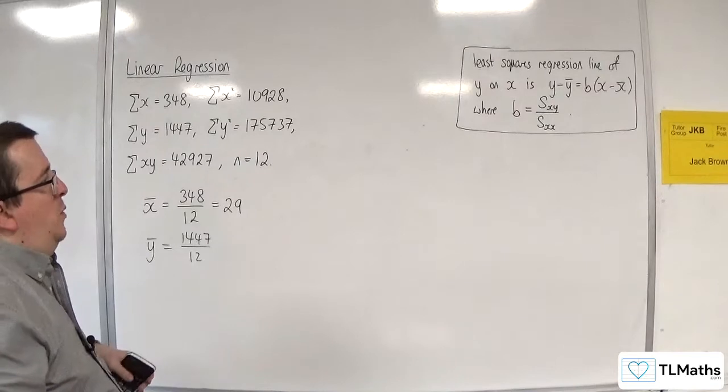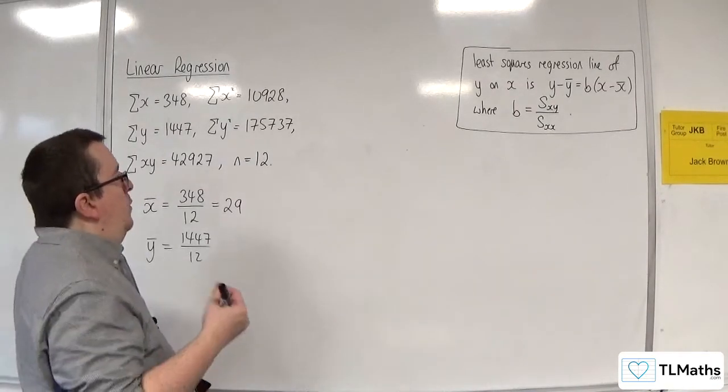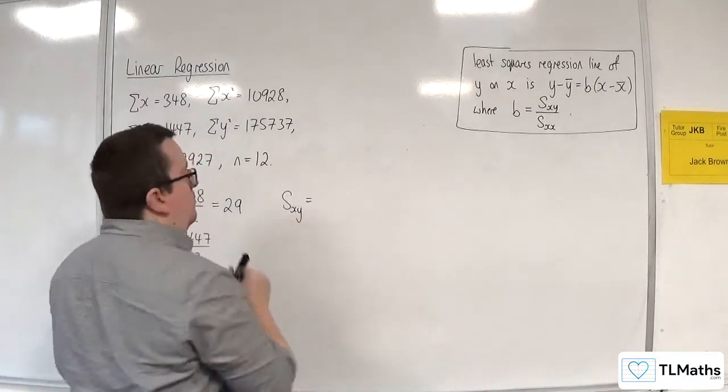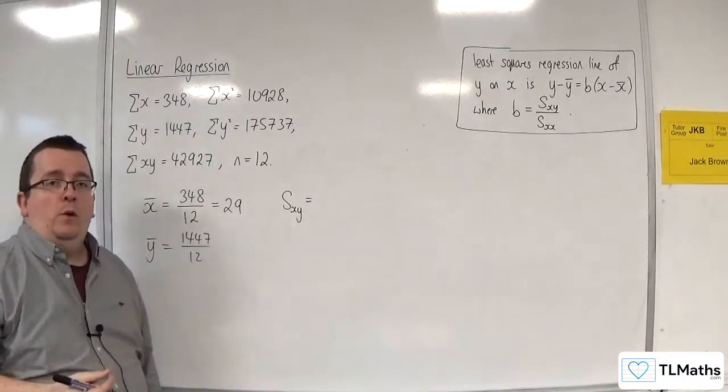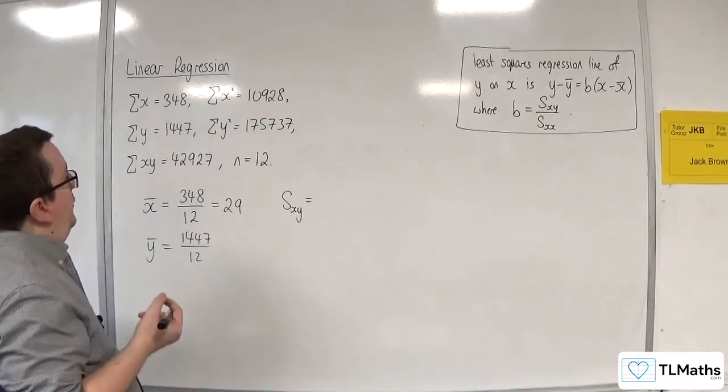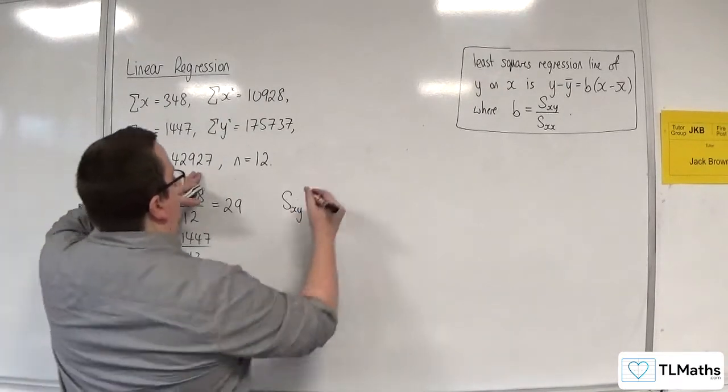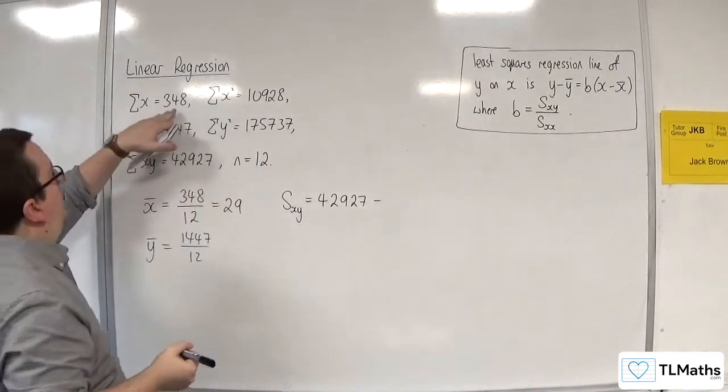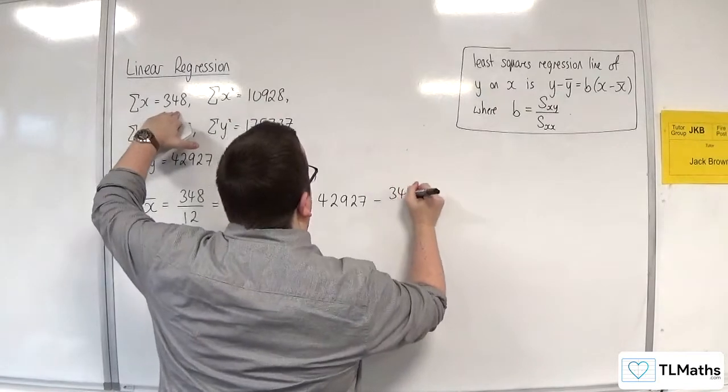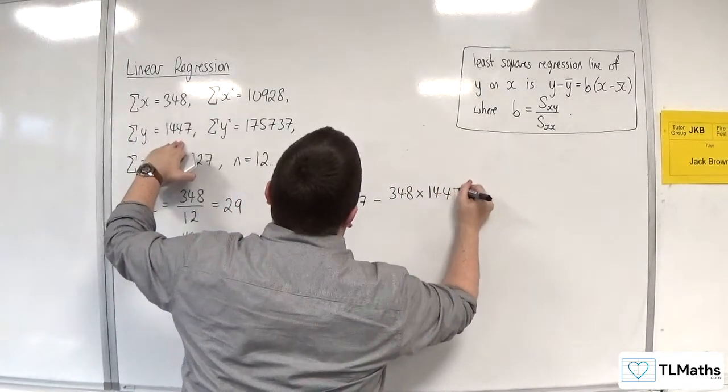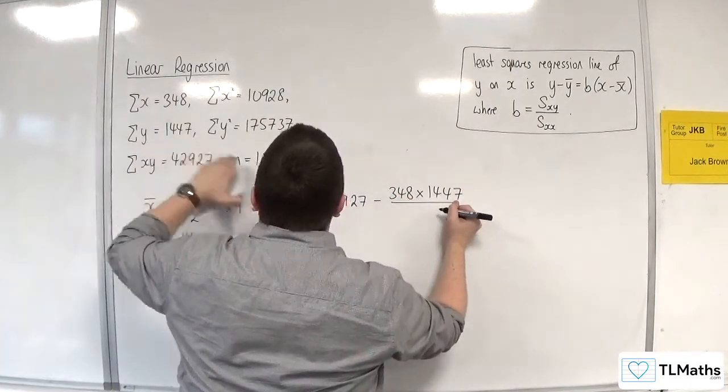So then I need to work out b. So I'm going to work out each bit independently. So sxy, this is good practice so that you can spot any little errors along the way. So that is the sum of your xy, so 42927, take away the sum of x, 348, times by the sum of y, 1447, divided by n.